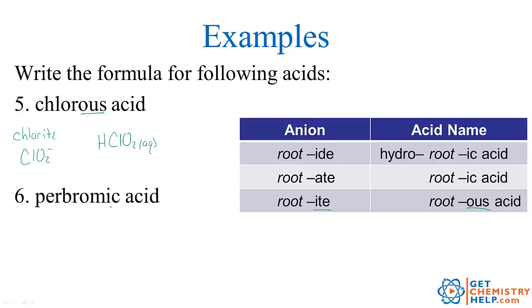How about perbromic acid? Well ic comes from ate. So perbromic must have come from perbromate ion. Bromate ion is BrO3 negative. Perbromate we add an oxygen. So BrO4 negative. We've got one negative. So we need one hydrogen plus cation to balance that out. So HBrO4. And again aqueous to show the acid's dissolved in water.